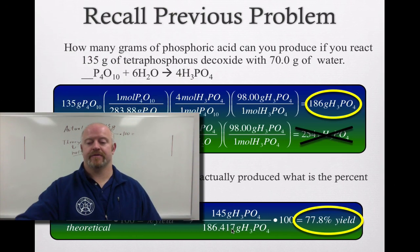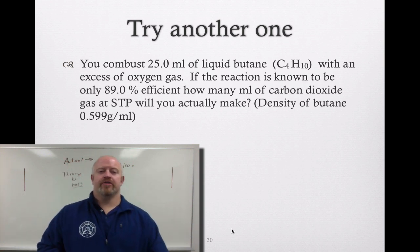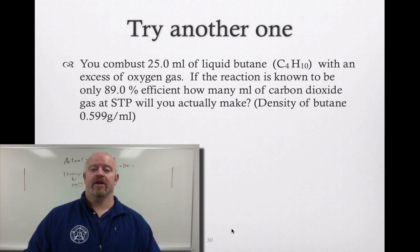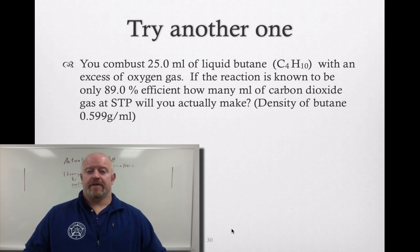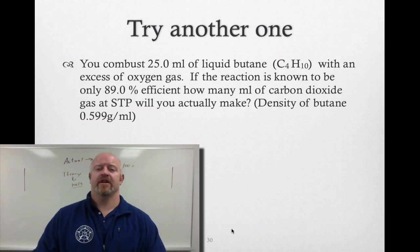Now here's another one that we're gonna try. You combust 25.0 milliliters of liquid butane with an excess of oxygen gas. If the reaction is known to be 89.0% efficient, how many milliliters of carbon dioxide gas at STP will you actually make? So this problem, if we take a look at it, has a pretty involved stoichiometry problem with it, but it's nothing that we can't handle. So let's walk through the whole process together and then we'll actually factor in that percent yield in our answer.